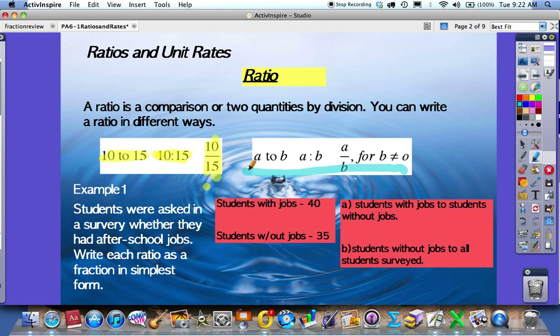Pause the movie now and write down the examples for 10 to 15, 10 to 15, and 10 over 15, as well as the examples with the a's and b's.